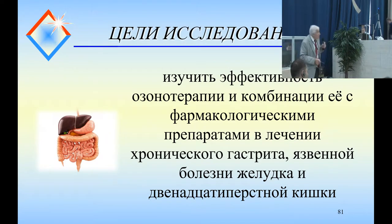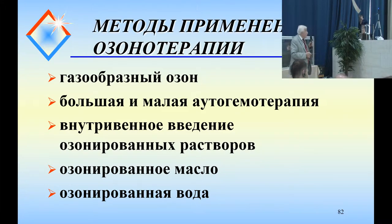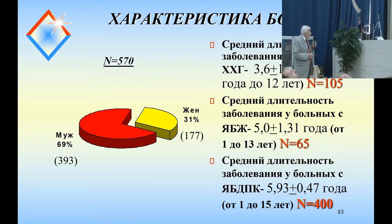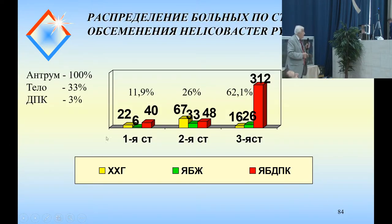The approaches we used are shown on the screen: intravenous application and rectal application were used. The total number of patients was 571. The breakdown includes 69 with male patients, 105 with chronic gastritis, 65 with peptic ulcer disease, and cases of digestive tract pathology, stomach, and Helicobacter pylori infection.